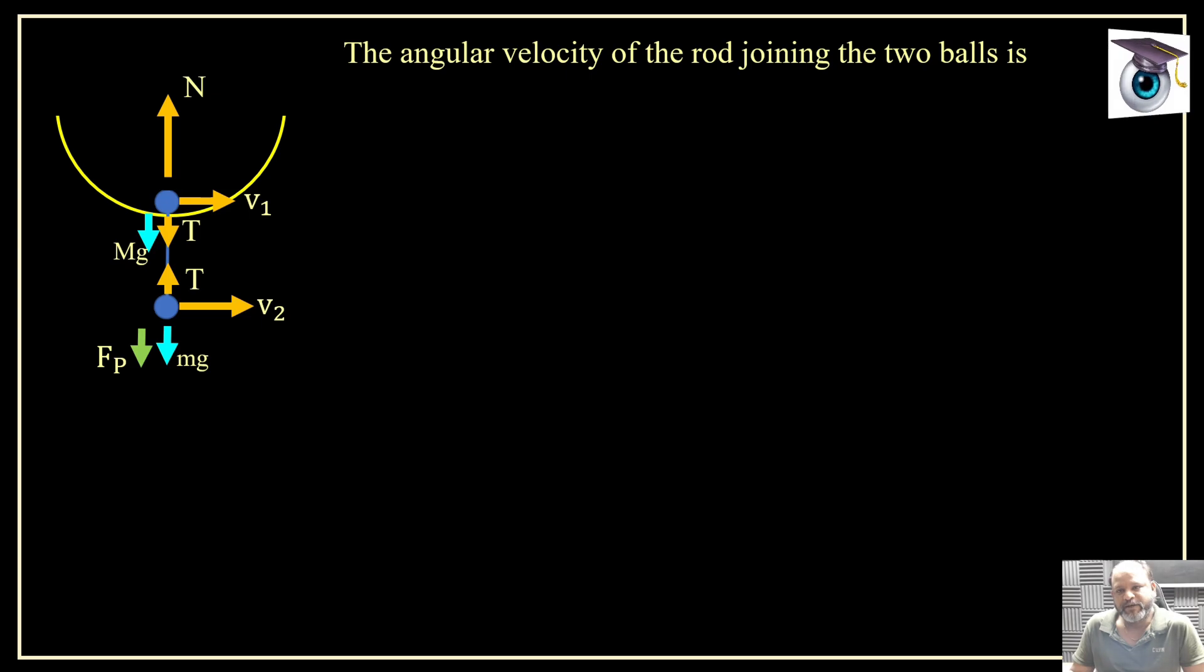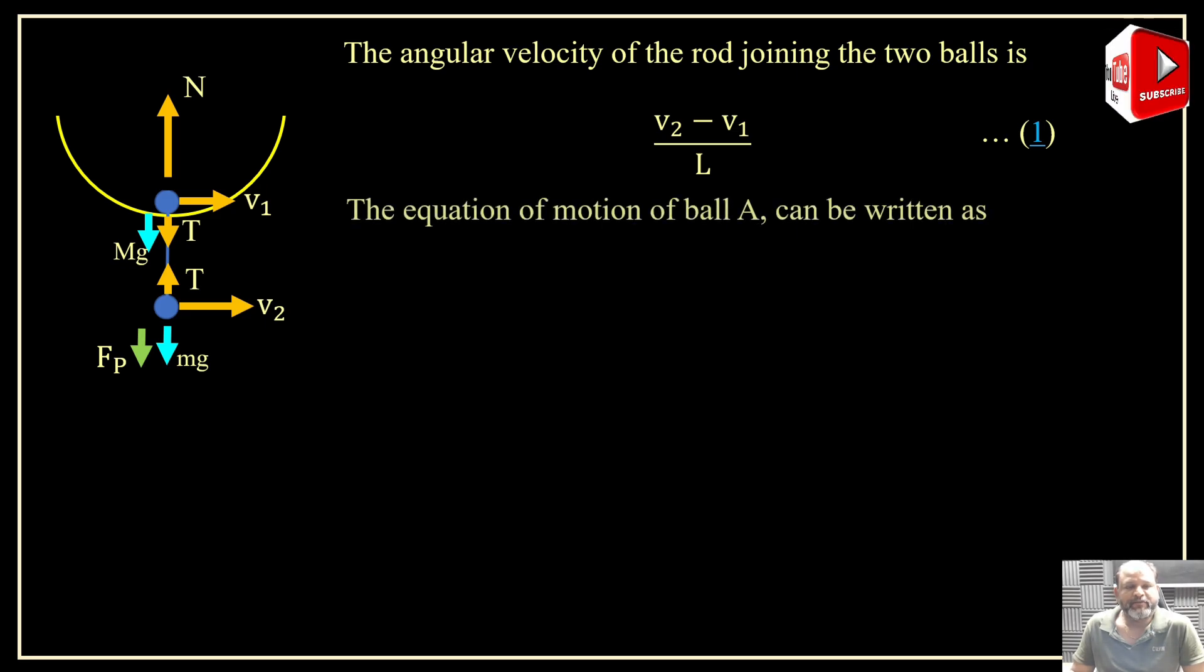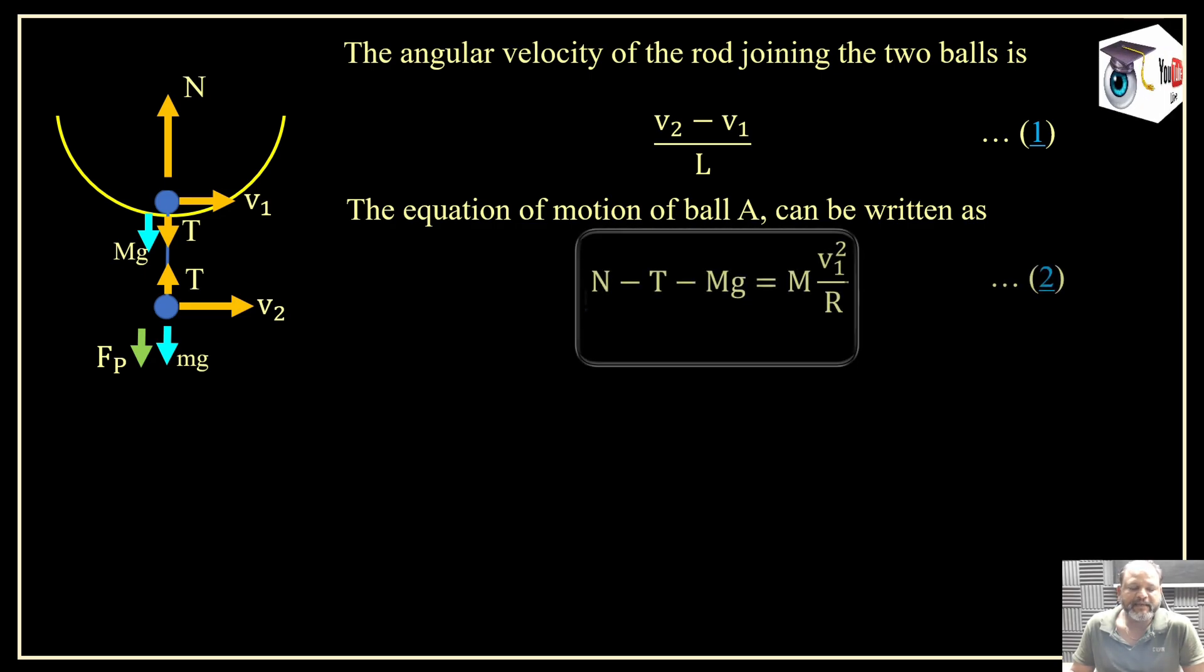Now omega, I can define omega of B with respect to A, which is v2 minus v1 by L. I have already explained this part. Now equation of motion of A I can write as: net force towards the center is M into v1 squared by R. So net force is N minus T minus Mg, and that is M v1 squared by R. We have already discussed this.